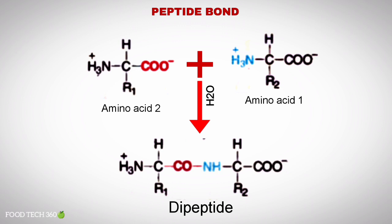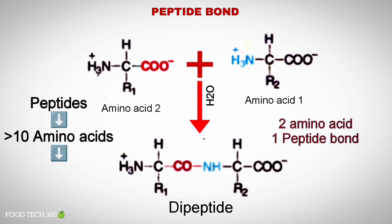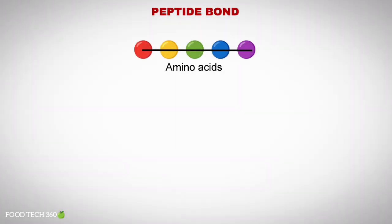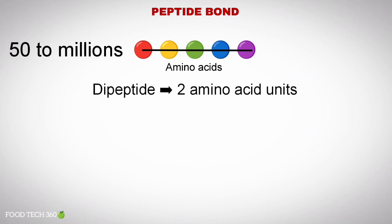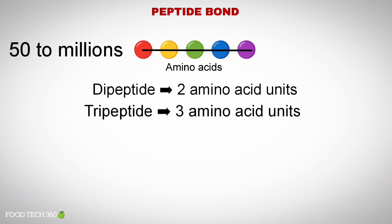You should note that a dipeptide will have two amino acids and one peptide bond. Peptides containing more than 10 amino acids are referred to as polypeptides. Each peptide chain is of considerable length and may possess from 50 to millions of amino acid units. Depending on the number of amino acid molecules composing a chain, the peptides may be termed as a dipeptide, containing two amino acid units, or a tripeptide, containing three amino acid units, and so on.